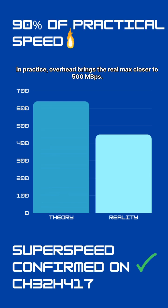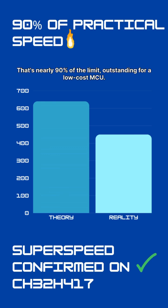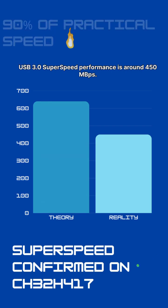In practice, overhead brings the real max closer to 500 megabytes per second. Our CH32H417 test hits 450 megabytes per second on a modest PC. That's nearly 90% of the limit — outstanding for a low-cost MCU.